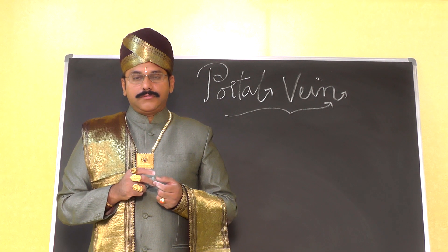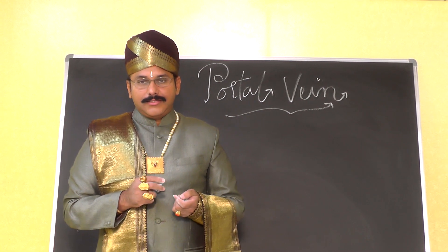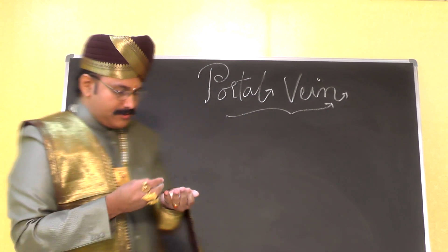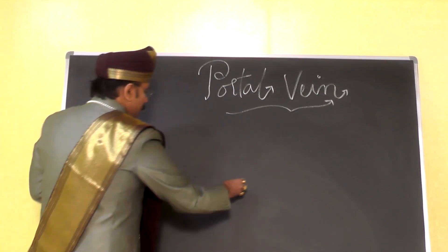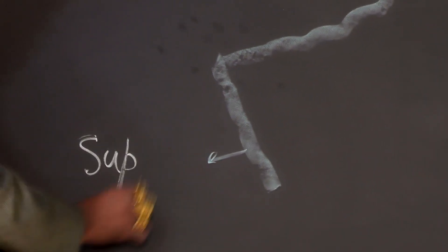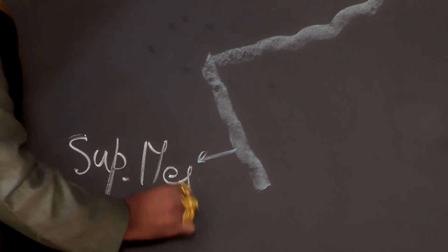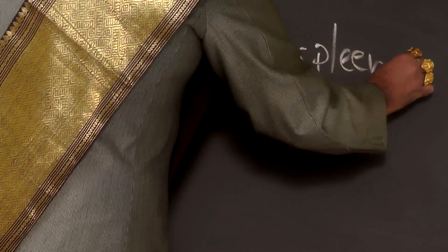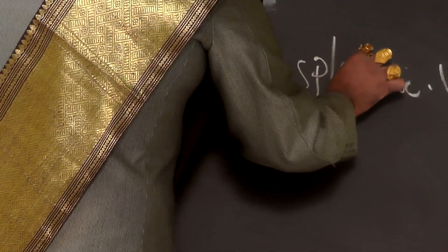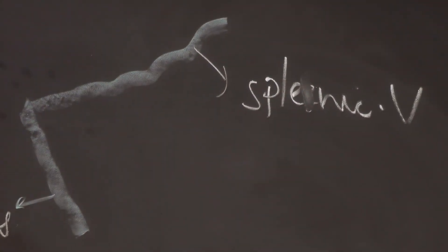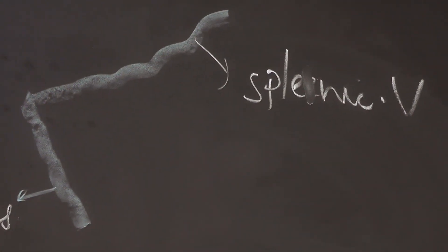Coming to the portal vein, the tributaries of portal vein are very interesting. There is the splenic vein and there is the superior mesenteric vein. Both these veins unite behind the neck of the pancreas to form the portal vein.